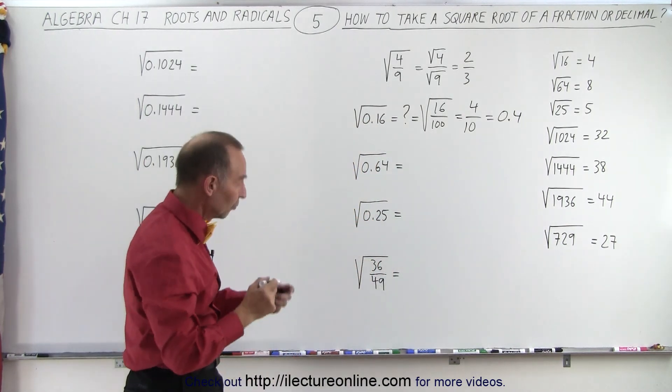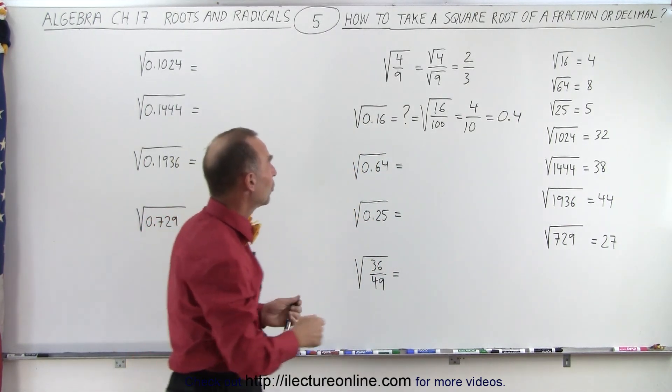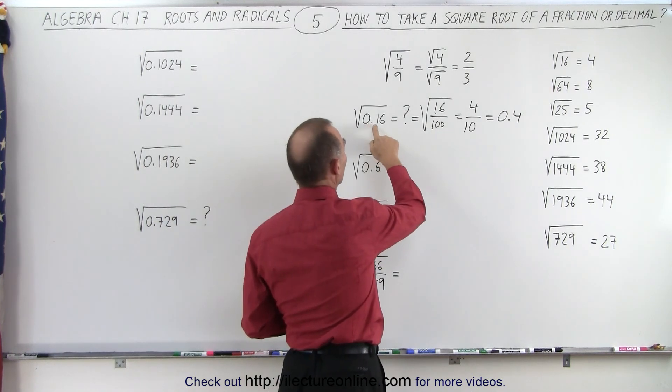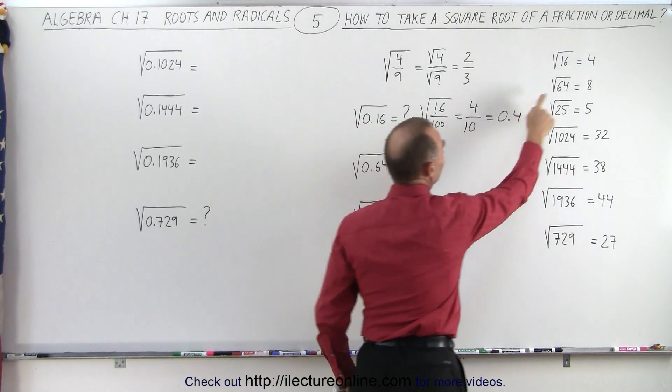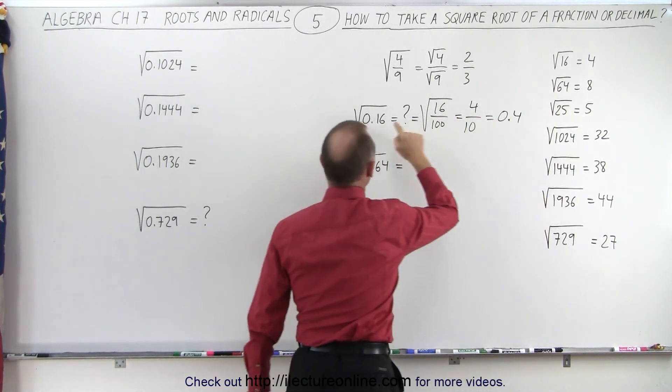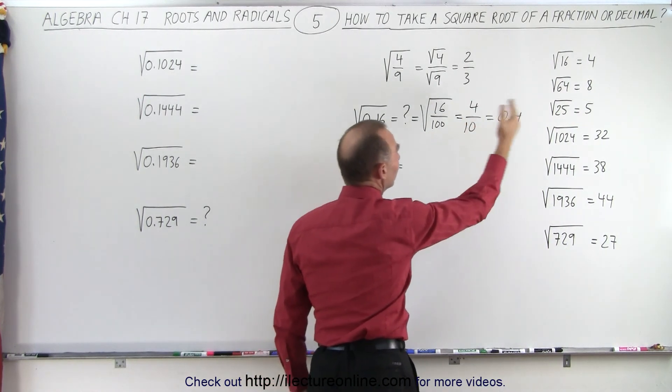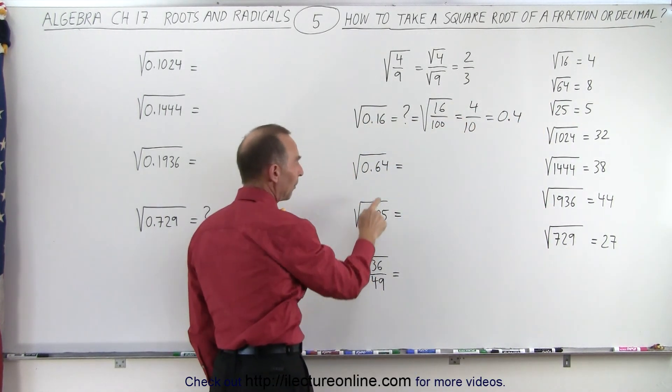A quicker way to do that is to recognize it as follows. You realize that the square root of 16 is equal to 4, so since we have the square root of 0.16, that is equal to 0.4.